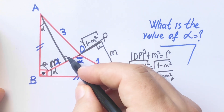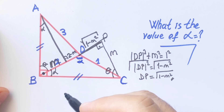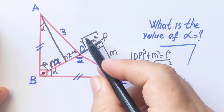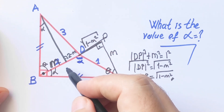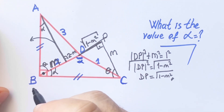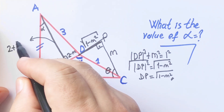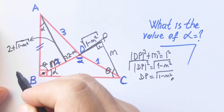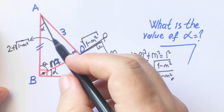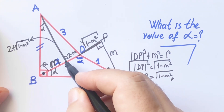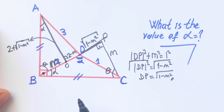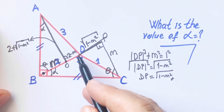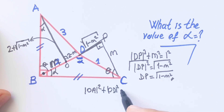This length was given as 2 at the beginning of the question, so the remaining length here will be 2 − m. The side across from theta is 2 + √(1 − m²). Let's label the point O and apply the Pythagorean theorem in triangle OAD.